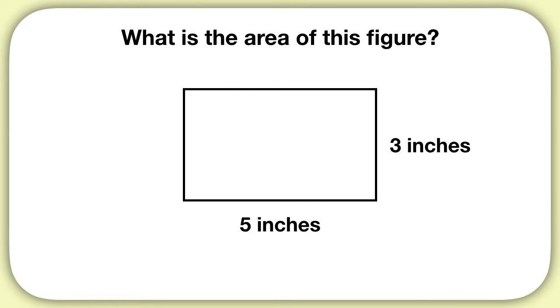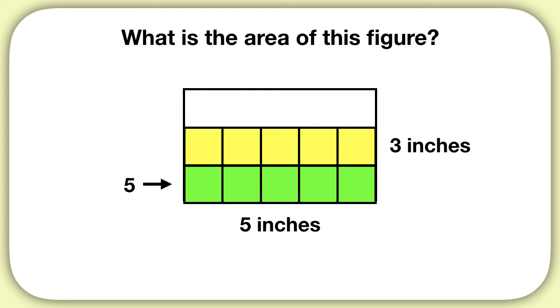Let's take a look at this rectangle. We could put down a first layer of squares, and we know that that is five unit squares. Then we could put a second layer down, that would be another five. And we could put a third layer down, that would be another five.